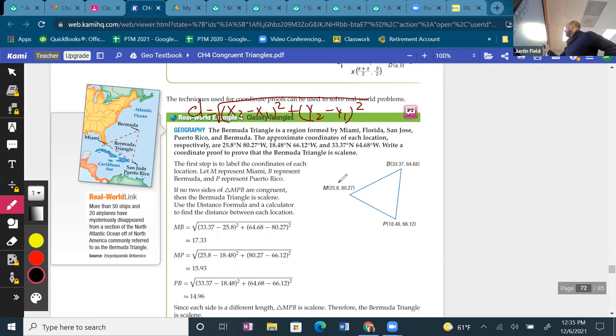We can use the distance formula to show the length of a side. We have three locations given by their longitude and latitude. Longitude and latitude is like a coordinate plane. The earth that we live on is like a coordinate grid. That's why Google Maps works so well. We can use the distance formula to find exact distances from place to place. We know that side using the distance formula is 17.33, MP is 15.93, and then 14.96.